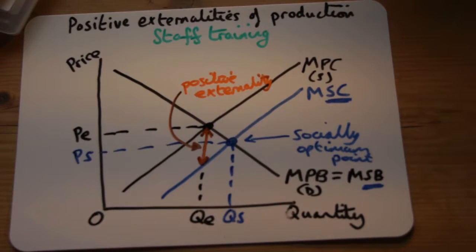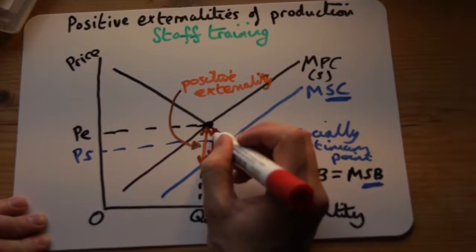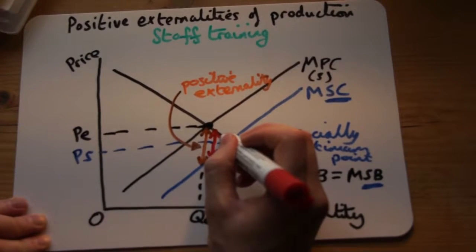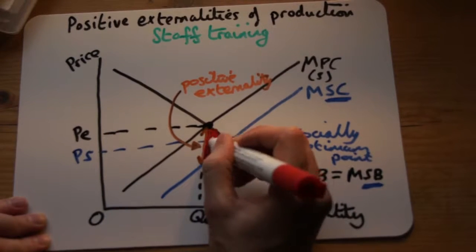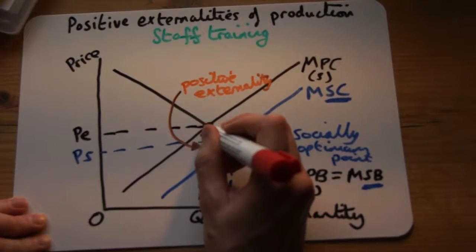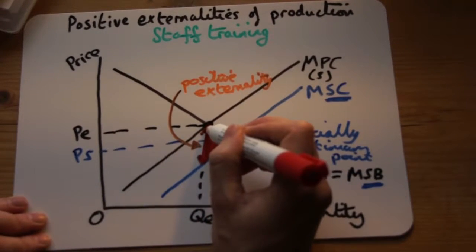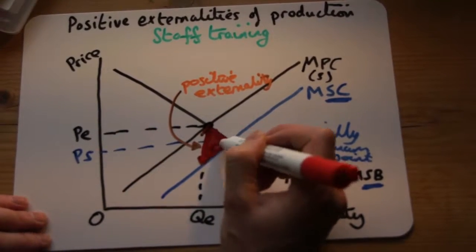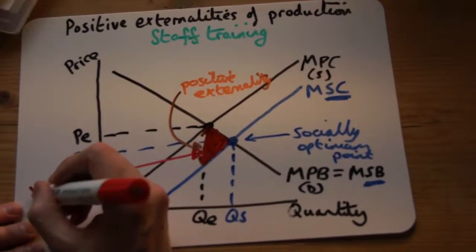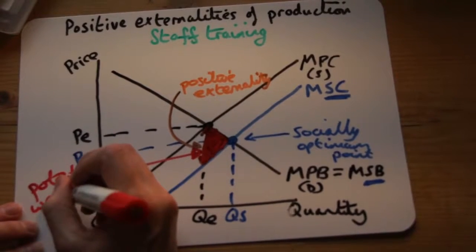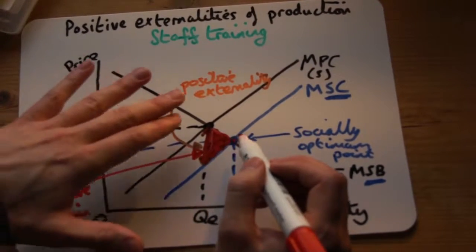We need to find the deadweight welfare loss, or the potential welfare gain. If we produced a little bit more staff training there would be fewer positive externalities left to take advantage of, so what we want to do is maximise our positive externalities. All we do is go from the free market point to the social cost line and shade in this triangle. This deadweight welfare triangle shows us the potential welfare gain if we actually produced at the socially optimum point — we would eliminate this triangle and gain all of those positive externalities.